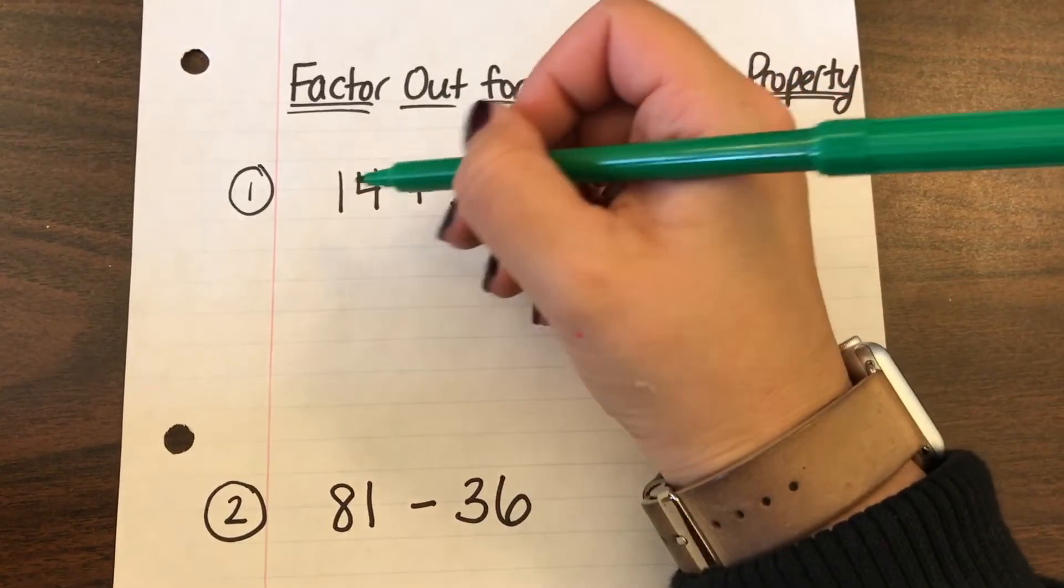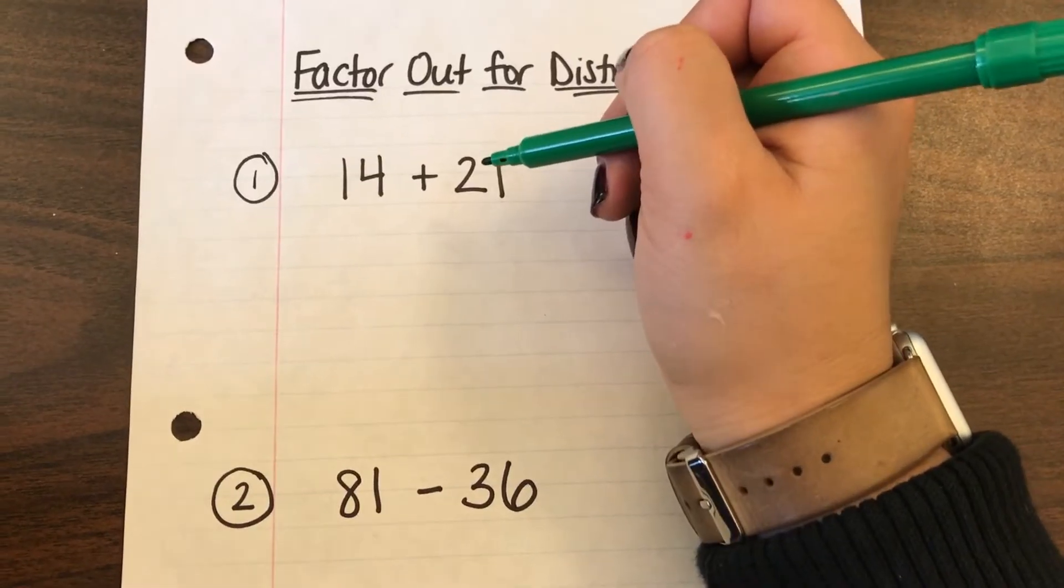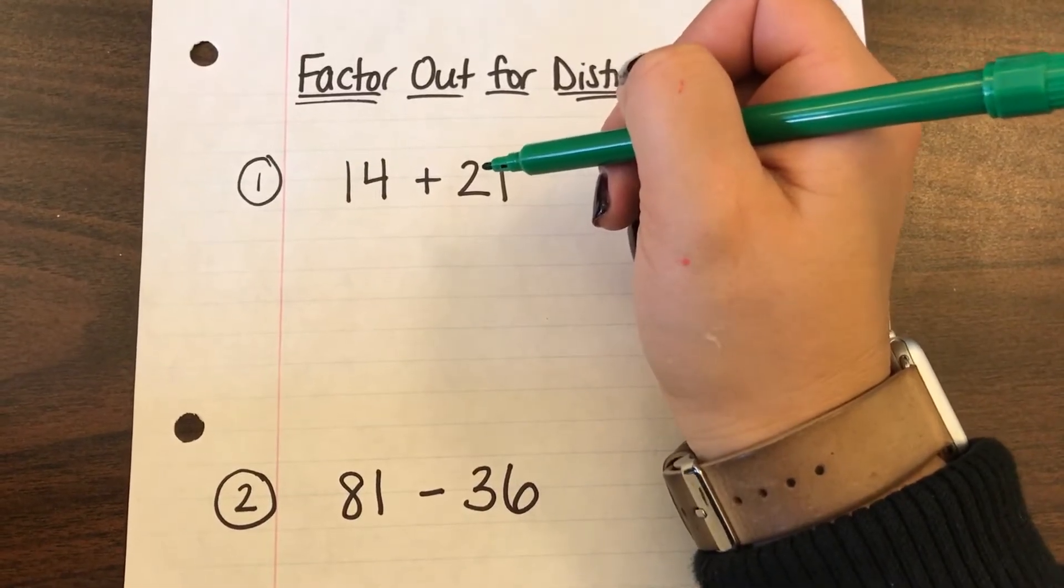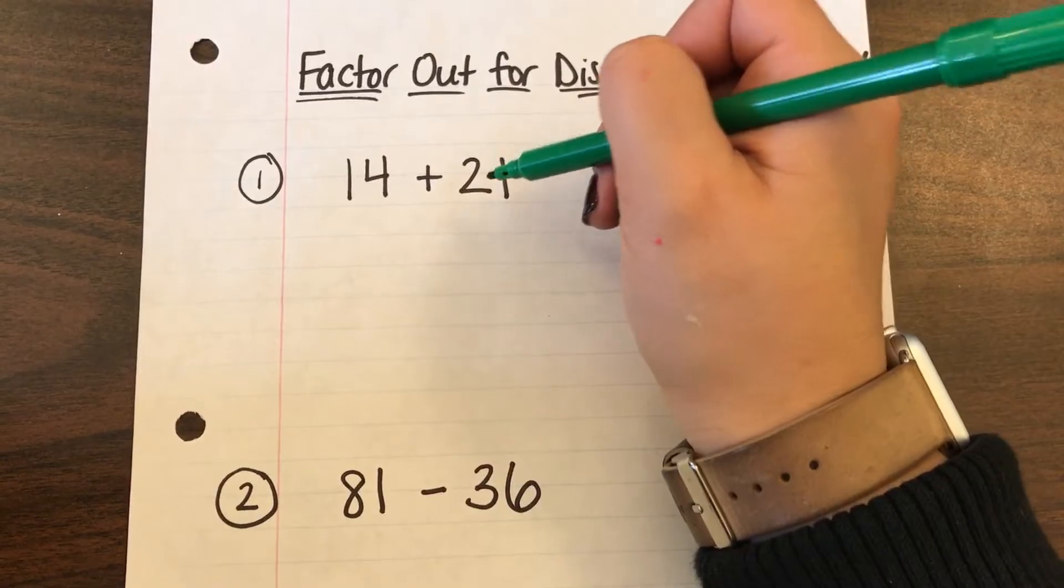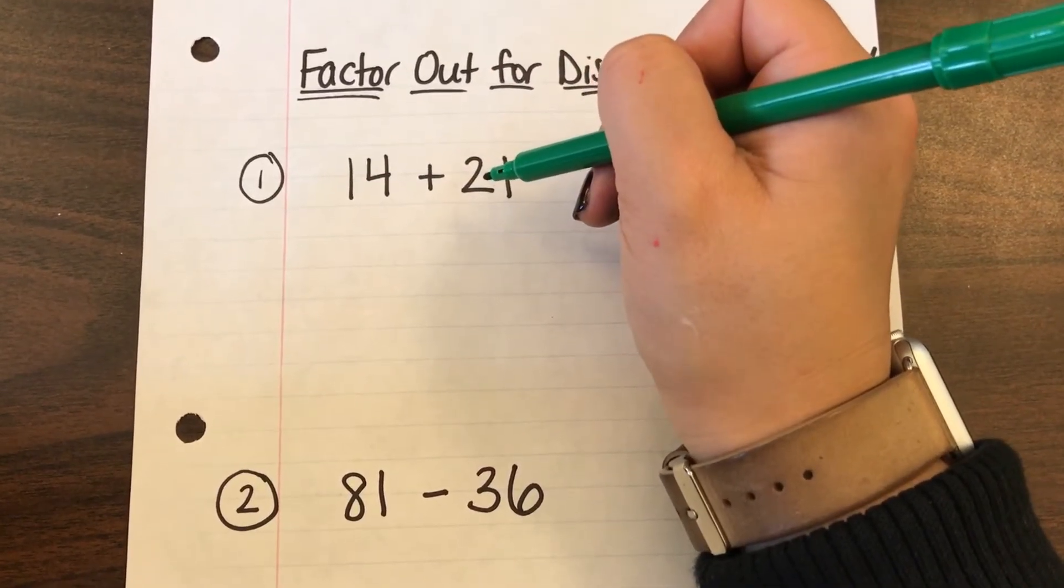So what I first want to do is find the factors of 14 and 21 or ask myself what number can be factored out or what number can both of these, 14 and 21, be divided by that's the same.